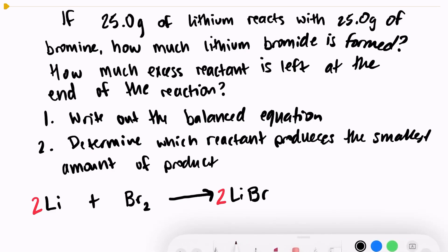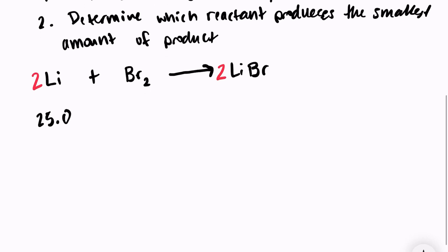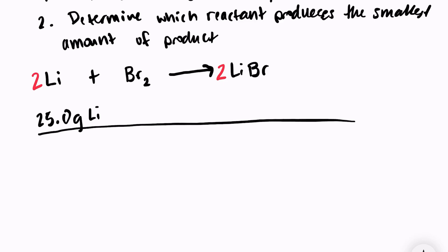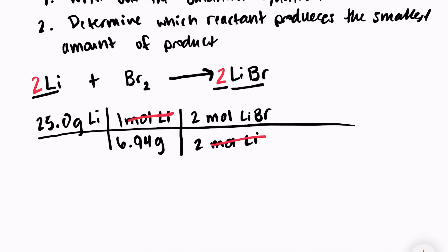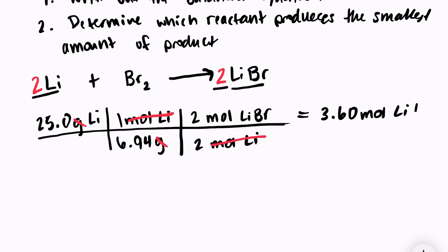Now let's figure out the limiting reactant. Starting with 25 grams of lithium, I convert to moles using the molar mass of lithium, which is 6.94 g/mol. Then I apply the molar ratio — 2 moles of lithium bromide over 2 moles of lithium. Grams cancel, moles of lithium cancel, leaving moles of lithium bromide. So 25 ÷ 6.94 = 3.6 moles of lithium bromide.